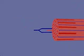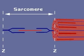The repeating arrangement of thick and thin myofilaments serves as the fundamental subunit of striated muscle contraction. These subunits are called sarcomeres.